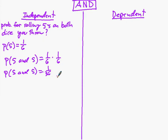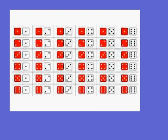Now I'm going to show you some visualizations that might help with understanding this. With two dice, it's relatively easy to see the sample space. Let's switch screens.